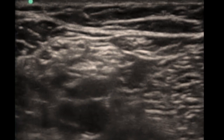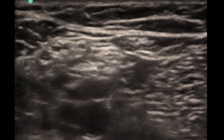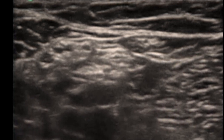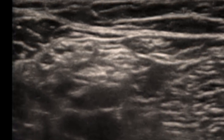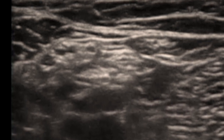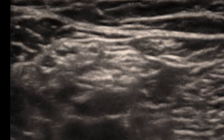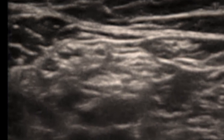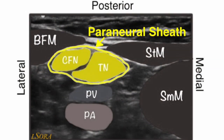In the centre of the screen, you will see the classical honeycomb internal architecture appearance of the sciatic nerve. It is viewed here as two separate components: the common fibular nerve laterally and the tibial nerve medially. This neural bundle sits above the popliteal vein and then the popliteal artery. On this diagram, you can see that the tibial nerve and common fibular nerve, although closely applied to each other here, are separate entities.